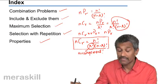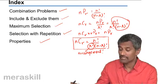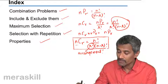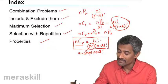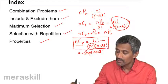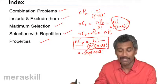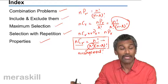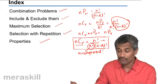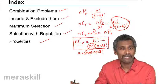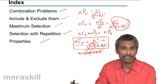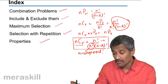We need to remember this particular formula: NCR equals n factorial upon r factorial into n minus r factorial. Whenever we need to select or choose something, we use the concept of combination.